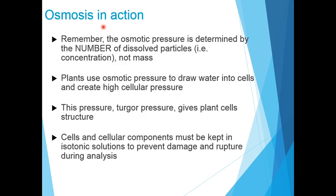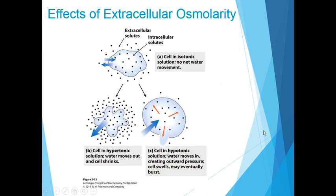Osmotic pressure is determined by the number of dissolved particles — that is, concentration — and not mass. Plants use osmotic pressure to draw water into cells and create high cellular pressure. This pressure, or turgor pressure as it is called, gives plant cells their structure. Cells and cellular components must be kept in isotonic solutions to prevent damage and rupture during analysis, which is important for cell biology experiments.